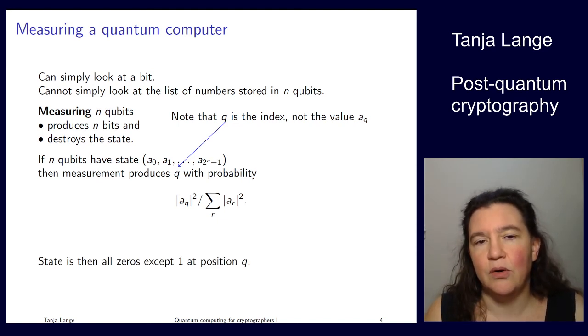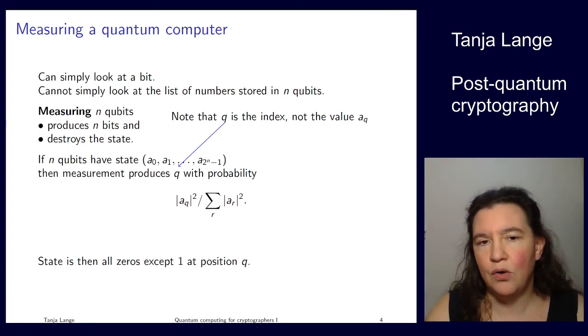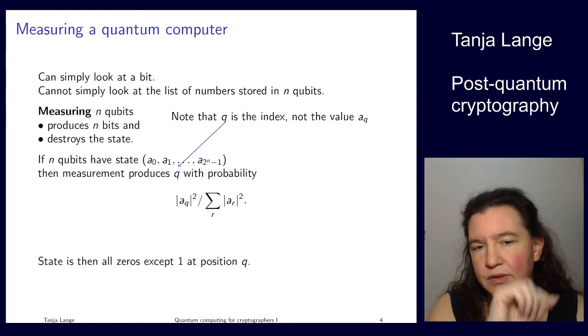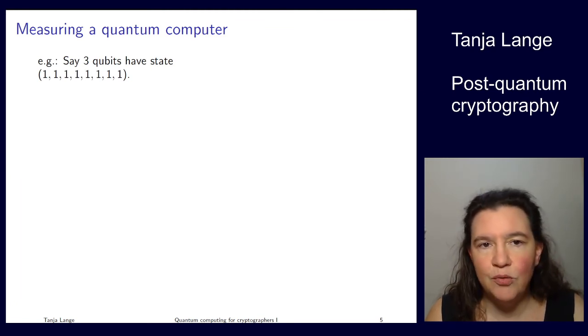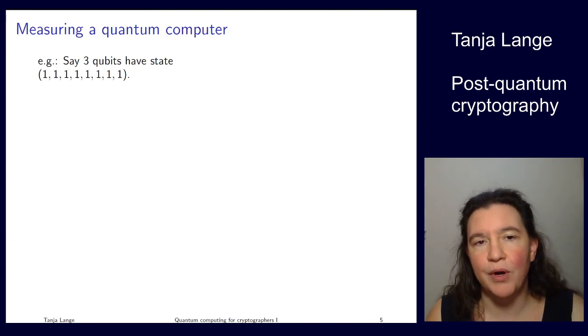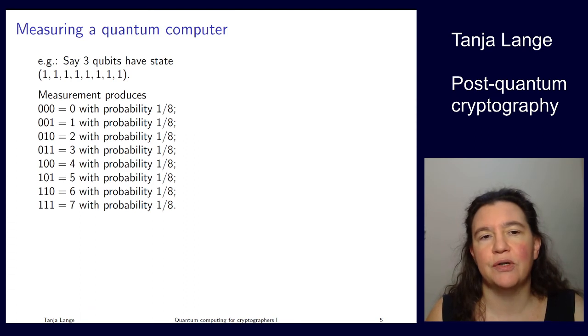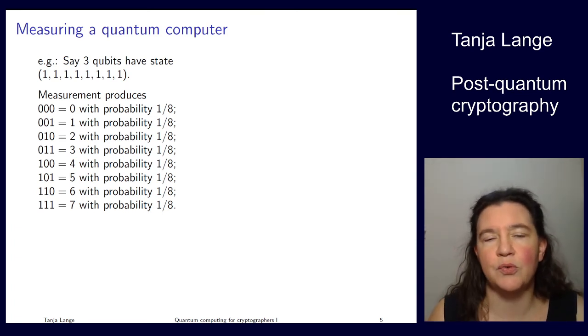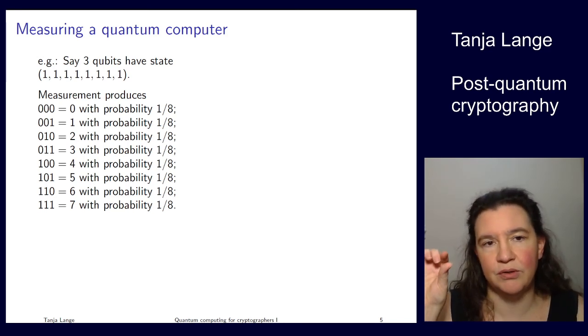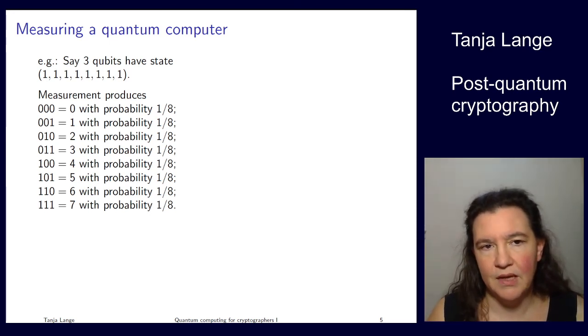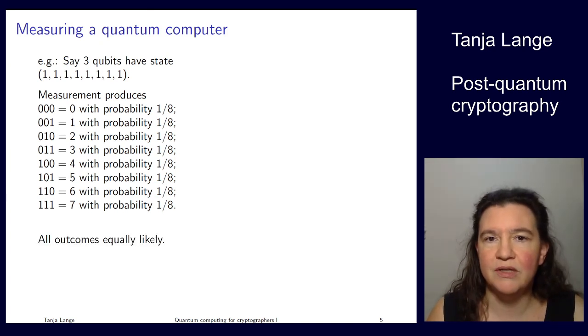So after the measurement, the state collapses to a pure state where it's just all zeros and then a one in position q and then all zeros again. So let's go through three examples of what happens when we measure. If we have the three qubits, so eight numbers here, and if all of them are one, we measure the number zero with probability one over eight. And the same is true for measuring the second position and the third position and so on. All outcomes are equally likely.